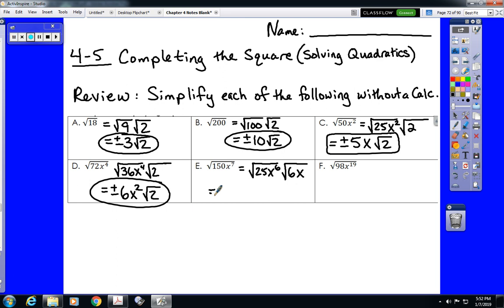So we would be looking at plus or minus 5x to the third, because again we divide this exponent by 2, root 6x, because that root 6x cannot be reduced.